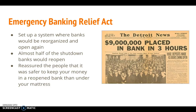Roosevelt reassured people, stating that the greatest primary task is to put people to work, and he promised immediate action on the banking crisis. Just two days after taking office, he ordered all banks to be closed for four days. He called Congress to a special session in which he presented the administration's plan for handling the banking problem. About seven hours later, Congress passed and Roosevelt signed the Emergency Banking Relief Act.